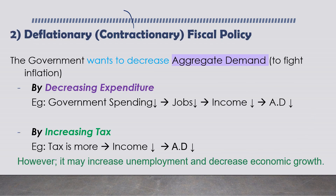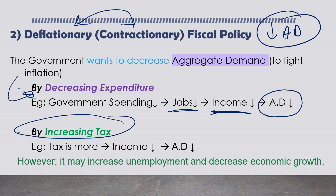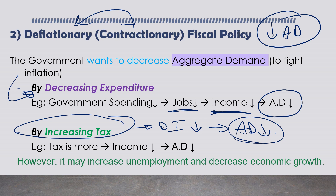A deflationary or contractionary fiscal policy is when the government wants to decrease aggregate demand in order to fight inflation and achieve lower prices. They can do this by decreasing spending, which means fewer job opportunities and less income, so people demand less. Or the government can increase taxes - when taxes increase, disposable income decreases and people demand less. However, this might create unemployment.